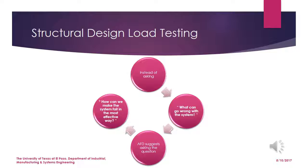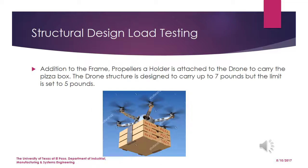From the IVV textbook: instead of predicting what goes wrong in a system, we can think about how to make the system fail most effectively. That is why we want to test our subsystem by adding more weight than it is designed for — to find the breaking point of structural design load. We designed the structure to carry up to seven pounds but promise our client only up to five pounds, to account for external forces like higher wind speeds. A holder is attached to the drone to carry the pizza box.